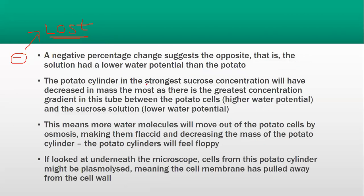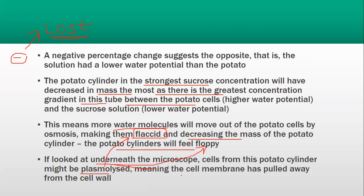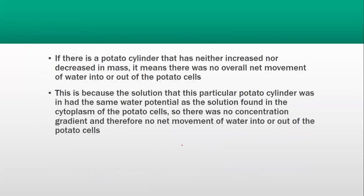The potato cylinder in the strongest sucrose solution will have decreased mass the most, as there is the greatest concentration gradient in this tube between the potato cells. This means more water molecules will move out of the potatoes by osmosis, making them flaccid and decreasing the mass of the potato cylinder. Hence the potato cylinder will not feel hard, it will be floppy or bent. If you looked underneath the microscope, cells from the potatoes might have plasmolyzed because the cell membrane has pulled away from the cell wall.